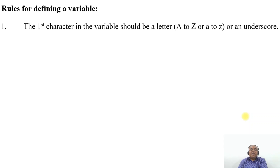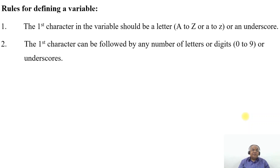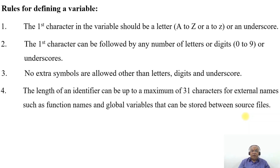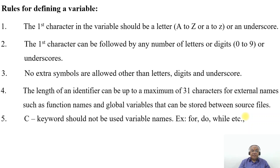The rules for defining a variable: the first character in the variable name should be a letter, that means A to Z or a to z, or an underscore. The first character can be followed by any number of letters, digits (0 to 9), or underscores. No extra symbols are allowed other than letters, digits and underscore. The length of an identifier can be up to a maximum of 31 characters for external names. Keywords such as for, do, while, etc. cannot be used as variable names.